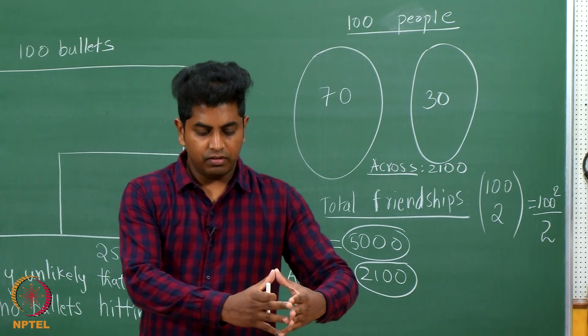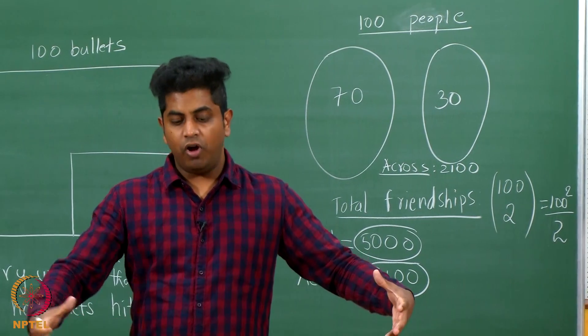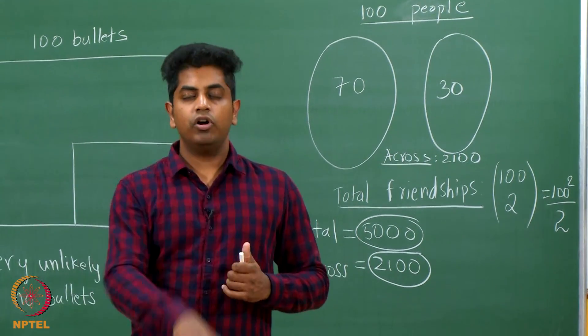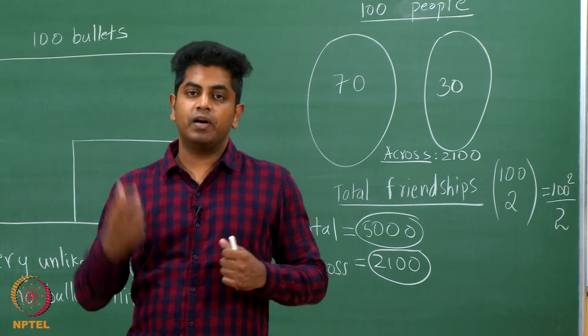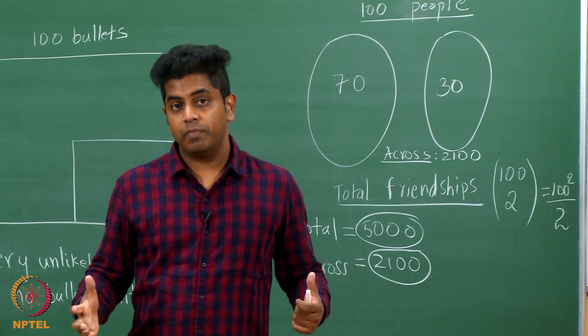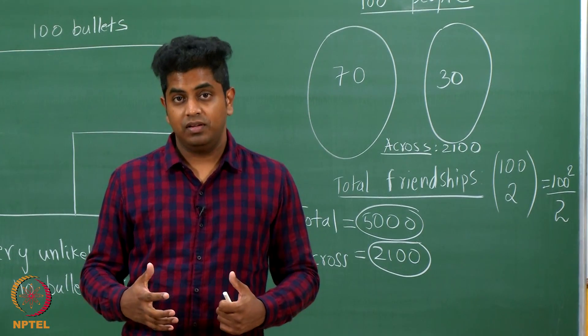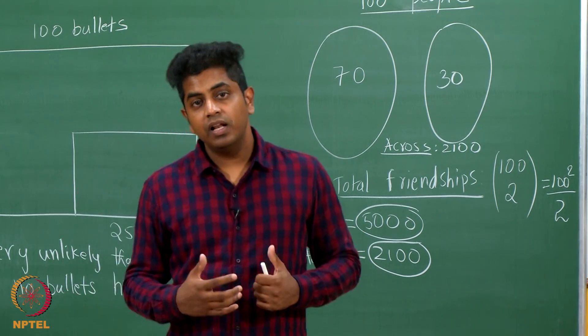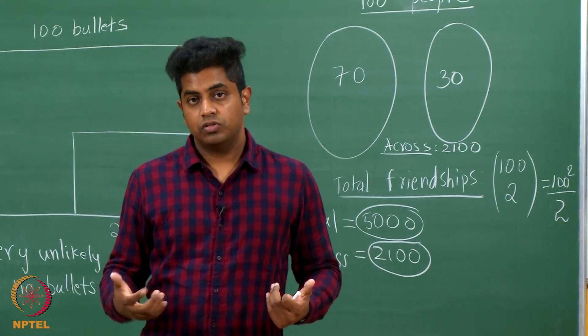There are let us say 20 balls in a basket, 10 black, 10 white. You pick some balls from this basket, all of them are black. You are picking them uniformly at random and all of them are black. Is this even possible? It is not impossible, it is improbable.